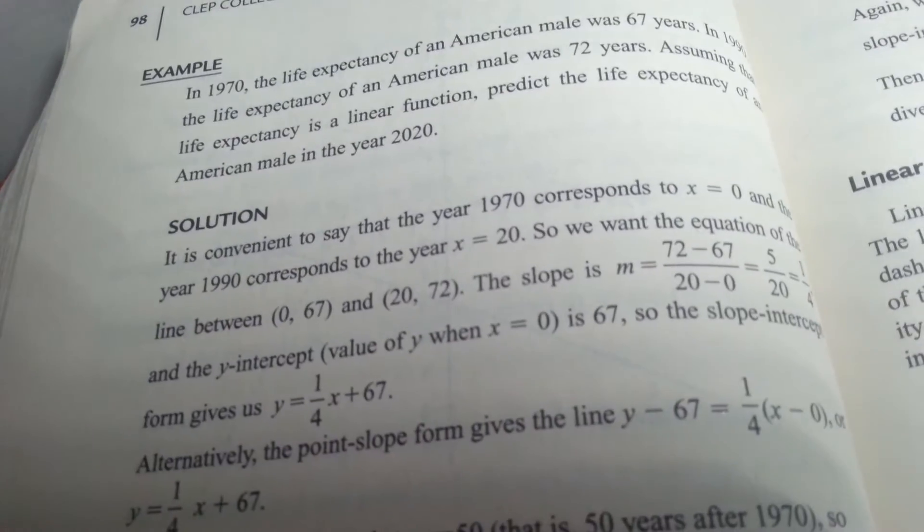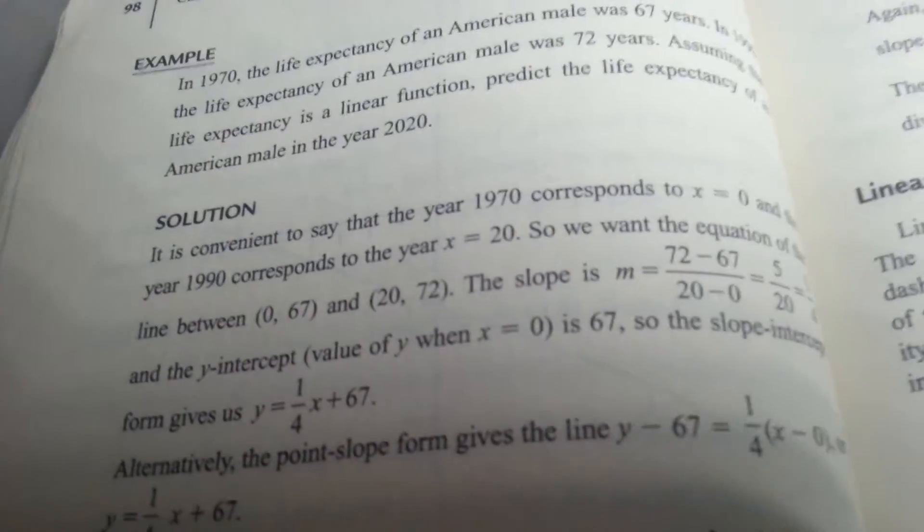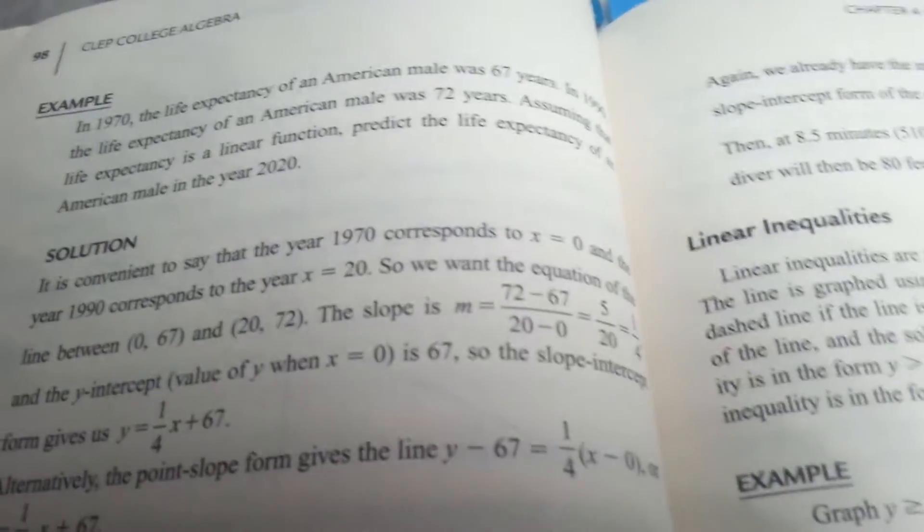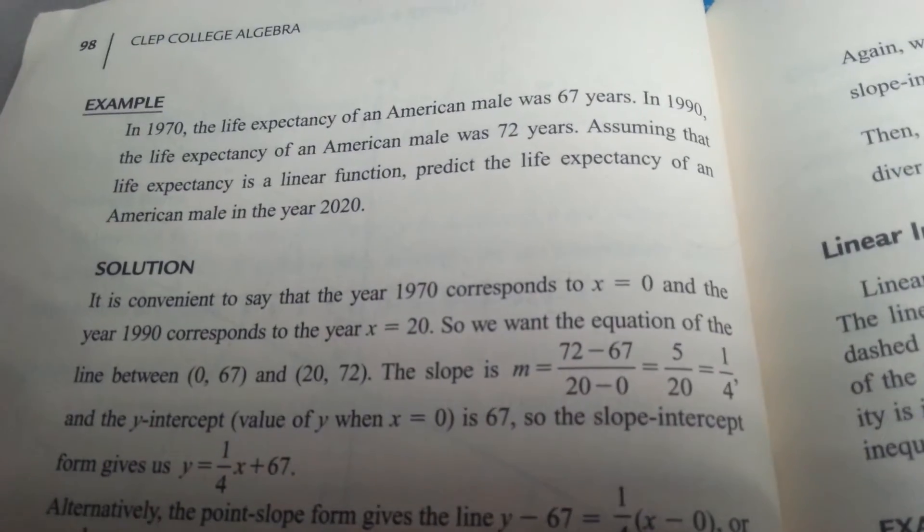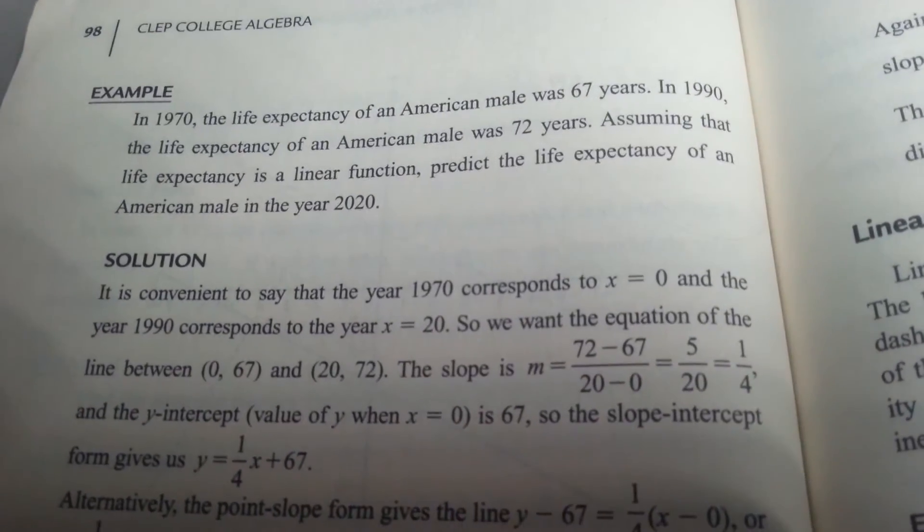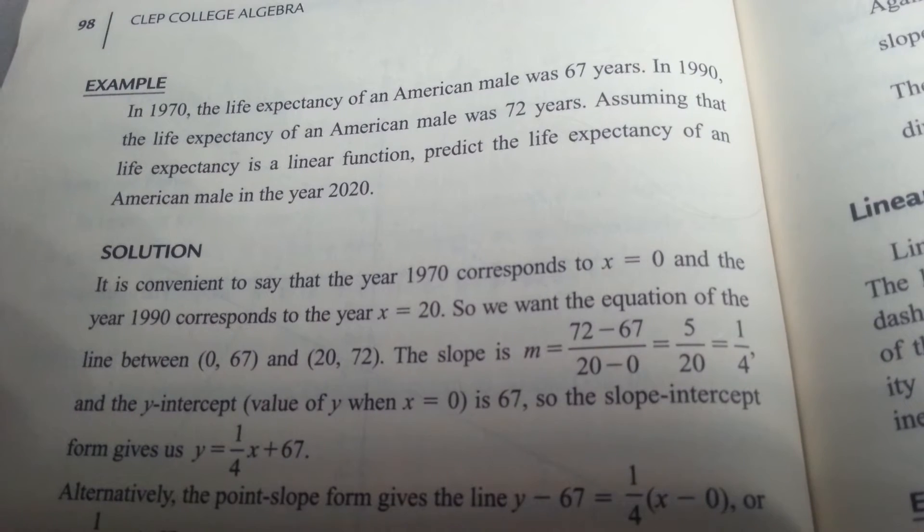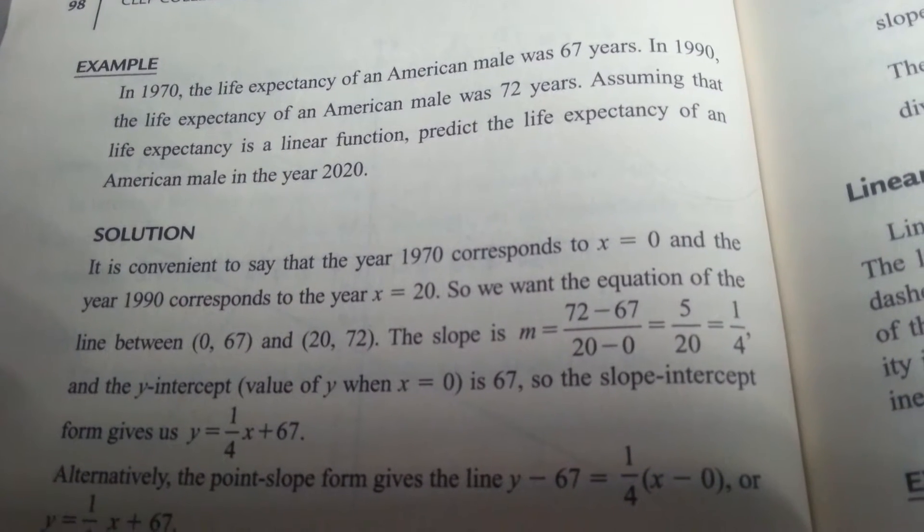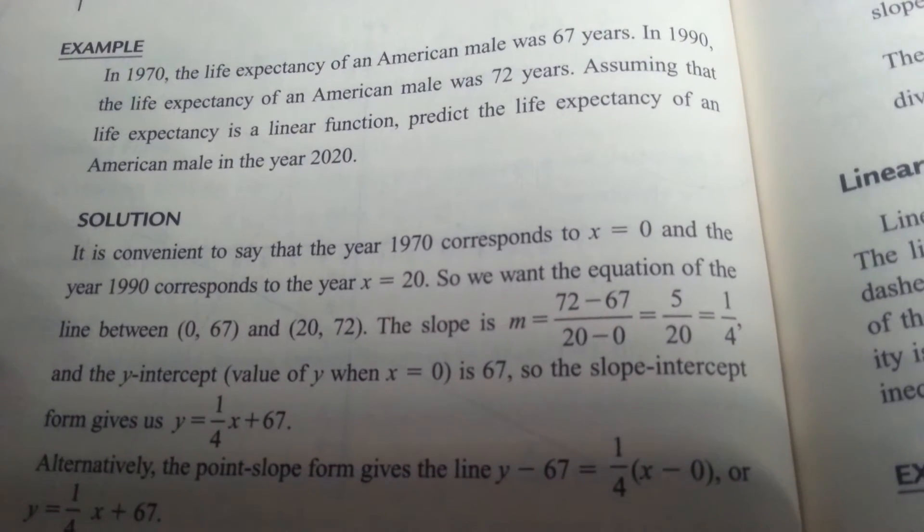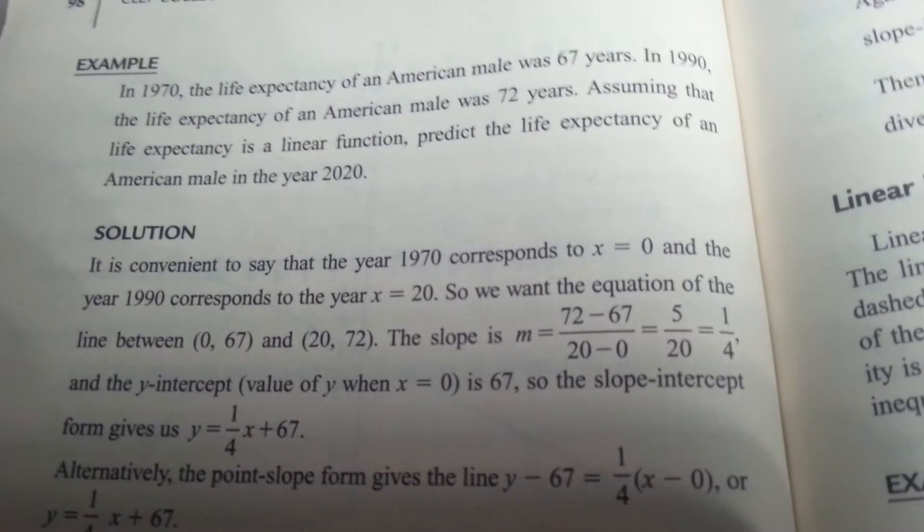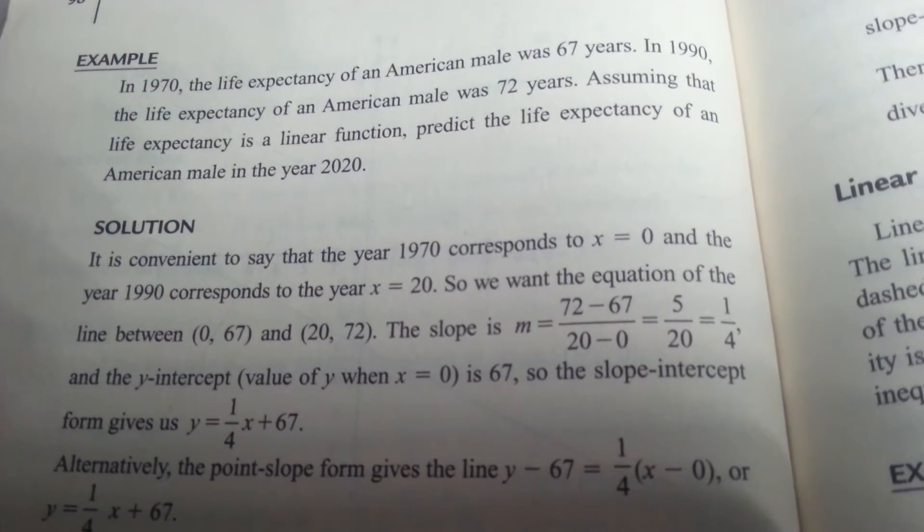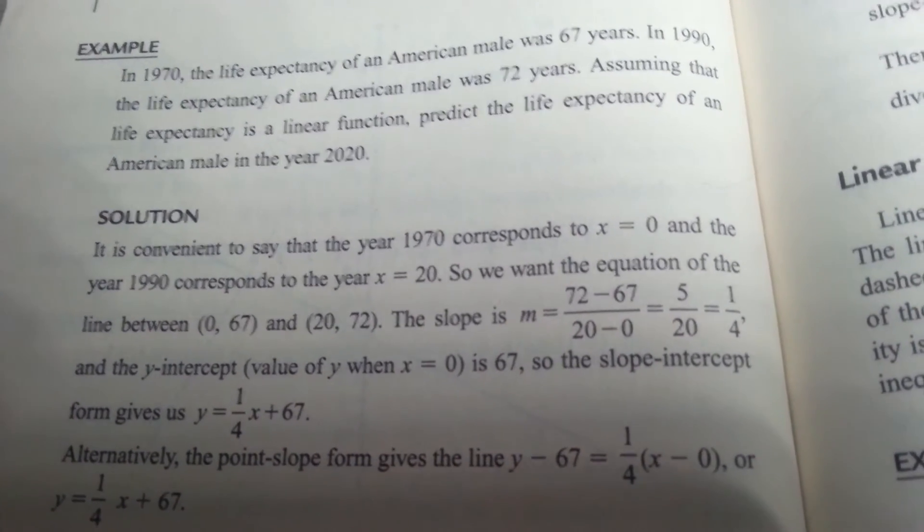So, as we can see, in 1970 the life expectancy of an American was 67, in 1990 was 72. So, assuming expectancy is a linear function, predict the life expectancy of an American male in 2020.